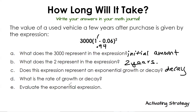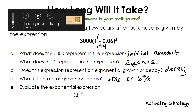So the rate of growth or decay — the rate is going to be 0.06, or six percent. We're going to talk a little more about this today. Go ahead and evaluate the expression — plug it into your calculator. What I got was 2,650.80. Is that what you got?